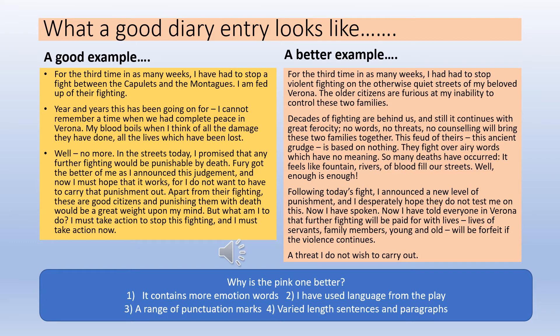The reason that second example would get a better mark: the language choices are much, much higher, as is the use of punctuation. There is nothing wrong with the punctuation in the first example, but in the second example the punctuation is used to really control the reader's journey — to slow them down and to speed them up — and there is a greater range of punctuation used. In addition to that, it would also score more highly because there is more evidence of manipulating sentence lengths to control the reader's experience, as well as that single-sentence paragraph at the end. That is the standard we are looking for.